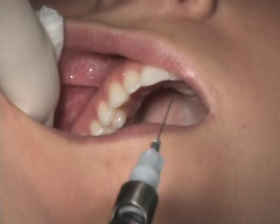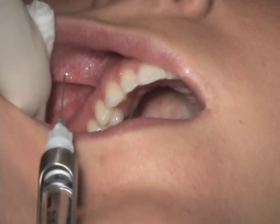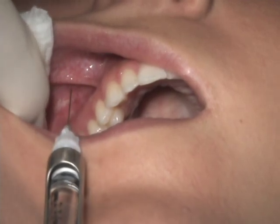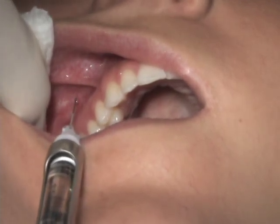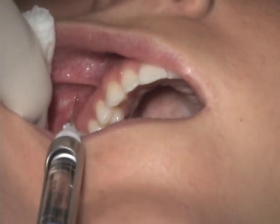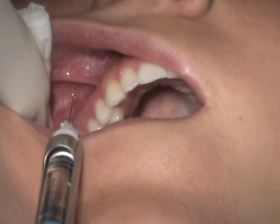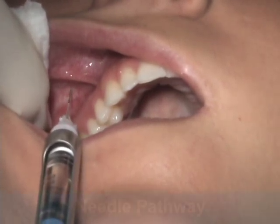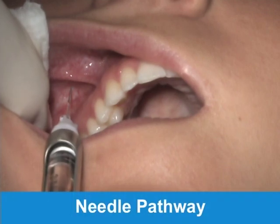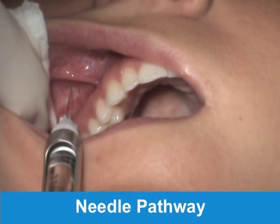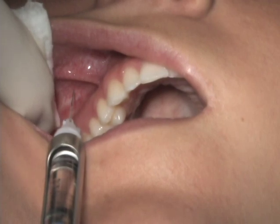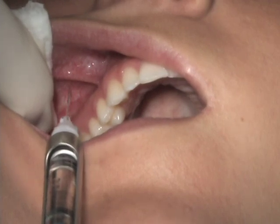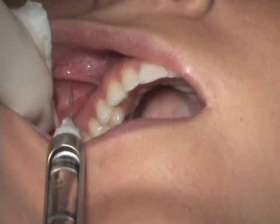If it is difficult to keep the syringe parallel to the long axis, penetration can be made between the two premolars, angling distally towards the apex of the second premolar. The pathway of the needle follows as parallel as possible with the long axis of the tooth above the apex of the second premolar.